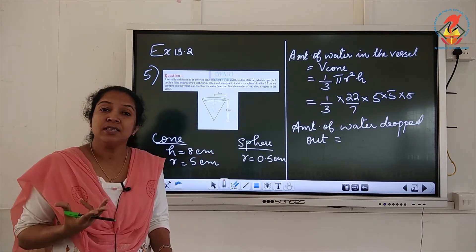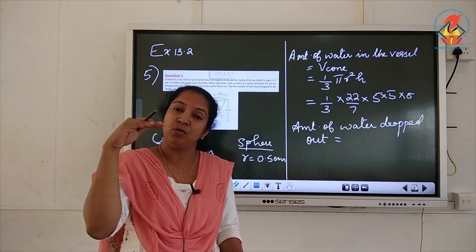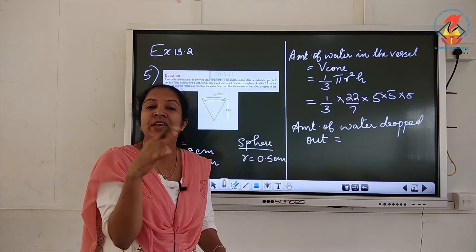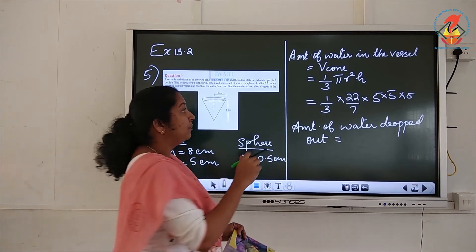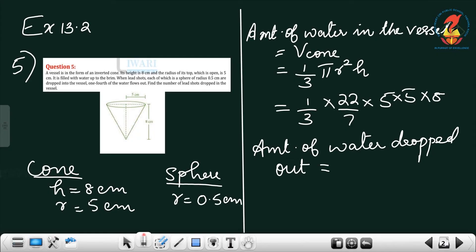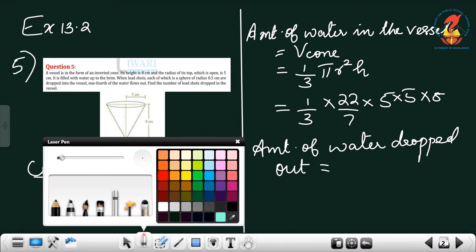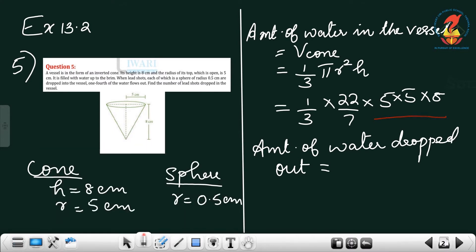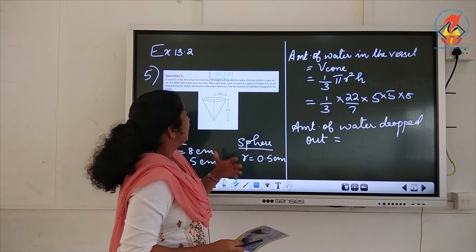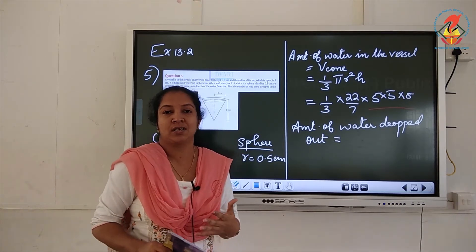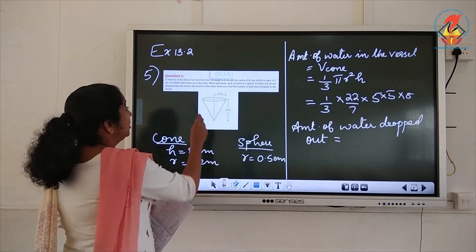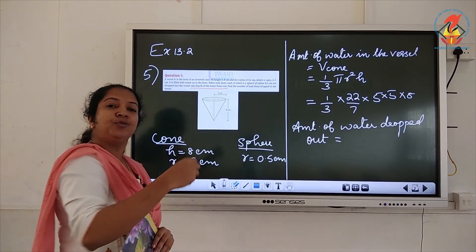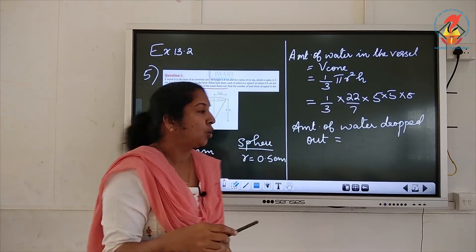The vessel is in the shape of a cone and water is filled up to the brim. So we can find the amount of water in that vessel, which is equal to the volume of the cone: (1/3) × (22/7) × 5 × 5 × 8. Lead shots are dropped in and water flows out. The amount of water that flows out is one fourth the volume of the cone.